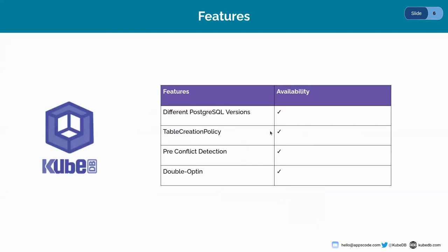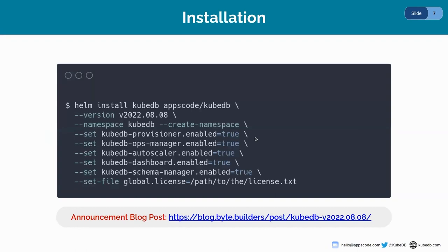Here we are providing certain features. You can implement it in PostgreSQL servers with different PostgreSQL versions. You can choose to create tables automatically if they don't exist in the subscriber database. You can choose the allowed subscriber to subscribe to the publication maintained by the Publisher CRD. We also detect pre-conflict issues. Here is the installation command for KubeDB — I have already installed it. So let's dive into the demo.